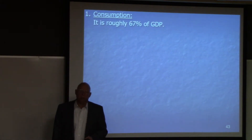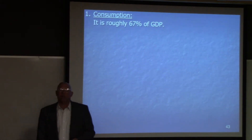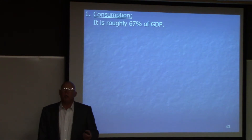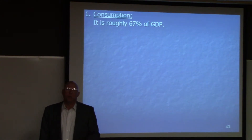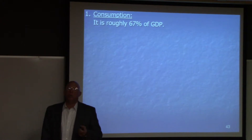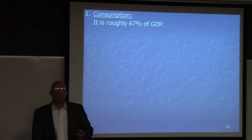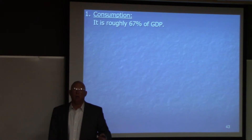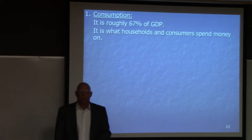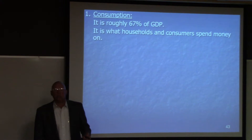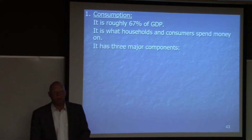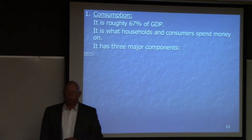Consumption is roughly 67% of U.S. GDP. It's much lower in other economies. After World War II, the U.S. government decided they really wanted to turn the U.S. economy into a consumption-driven economy — and guess what's happening in China now? The very same thing. Consumption is what households and consumers spend money on — what we buy to live. It has three major components.